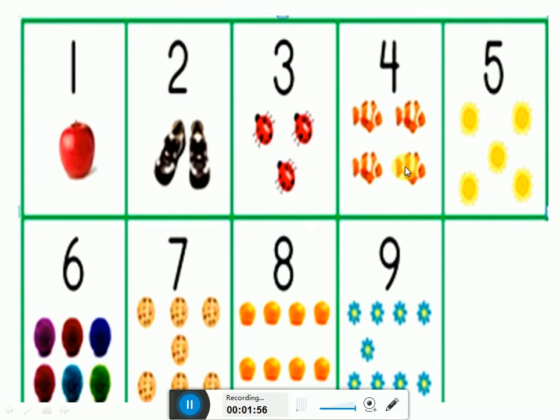4 fish. Here is number 5 and here are 5 flowers. How many flowers? 5 flowers. Let's count them. 1, 2, 3, 4, 5.